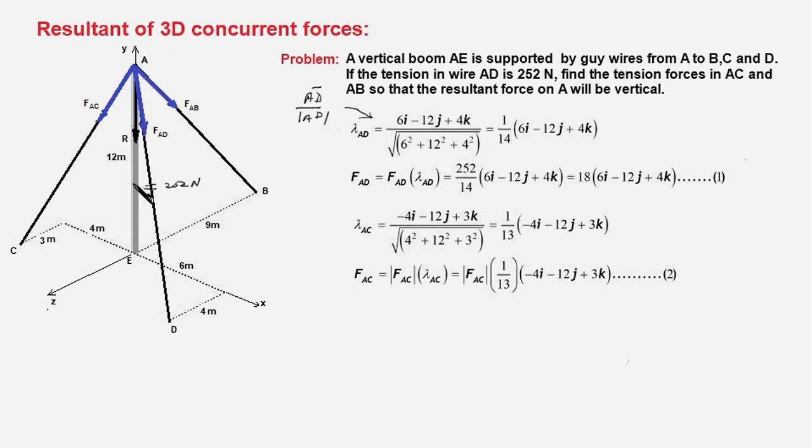And we go 12 units in minus Y direction, 4 units in minus X direction, and 3 units in positive Z direction. So we get minus 4i minus 12j plus 3k. The denominator is the magnitude of this vector and this gives us this result which is the unit vector along AC, and this multiplied by the magnitude of the force F_AC will give us this force in vector form. We do not know the magnitude of this force, so it is an unknown quantity.